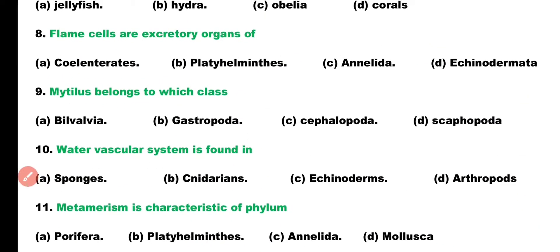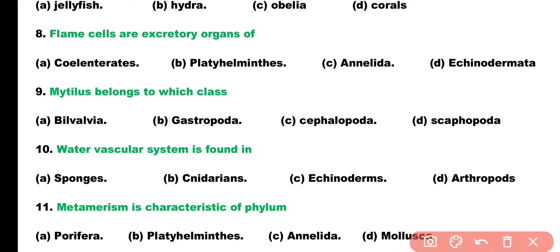Question 8. Flame cells are the excretory organs of: Coelenterates, Platyhelminthes, Annelida, or Echinodermata? Correct answer is Option B. Flame cells are the excretory organs of animals present in Phylum Platyhelminthes.